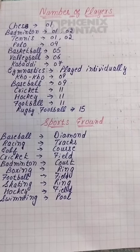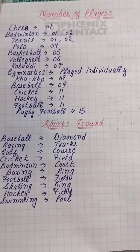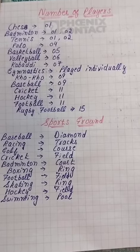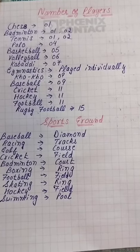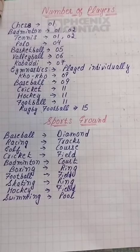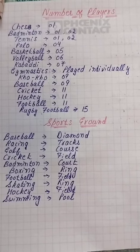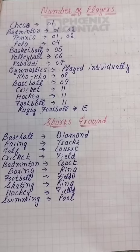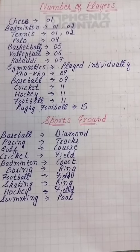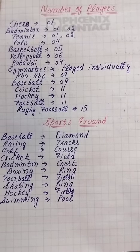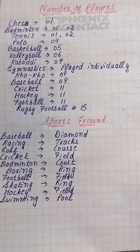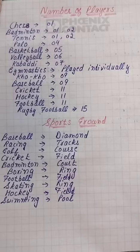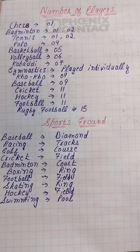Hello friends, welcome back to my channel. This video is based upon the number of players in different games and sports. First game is chess — in chess, a single player plays, so there is one player. Badminton is also played single and double.